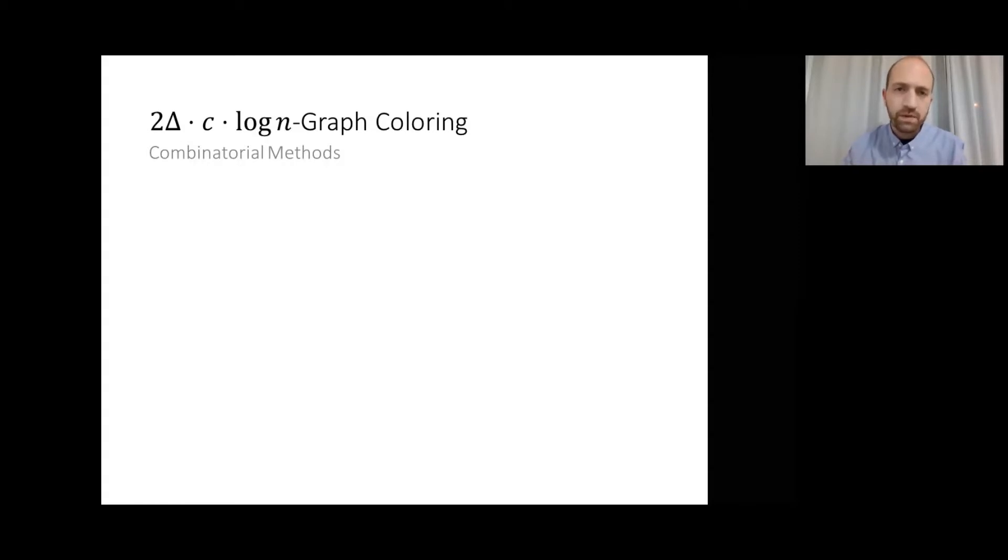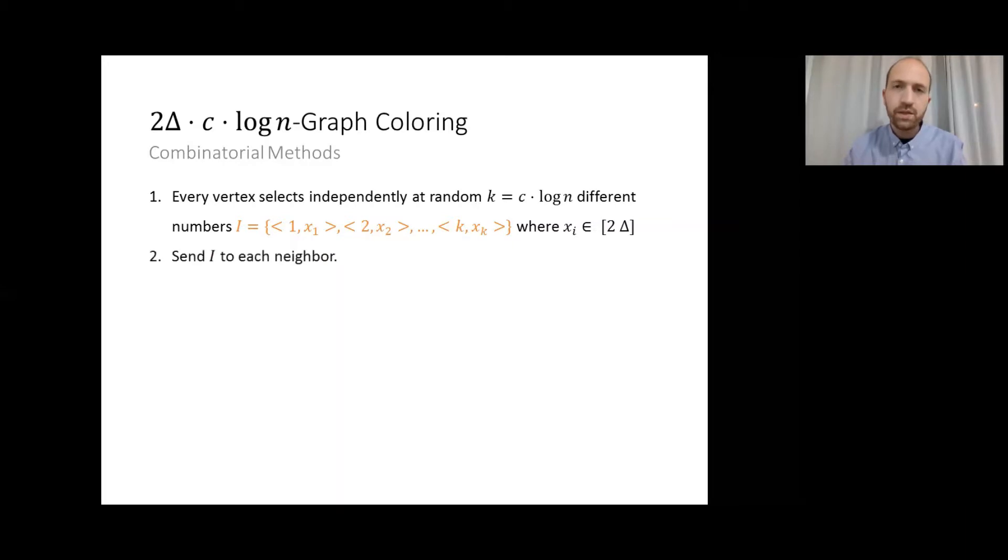As an example, consider the following algorithm. Each vertex selects independently in random k equals c log n different numbers between 0 to 2 delta for some positive number c. We define a set of labels i, which consists of tuples of the choices and their IDs. Then, each node shares its label set with its neighbors. Finally, each node removes any mutual label remaining with unique labels, which are all different from the labels left by its neighbors. Then, the node can pick an arbitrary label from the residual set of labels.